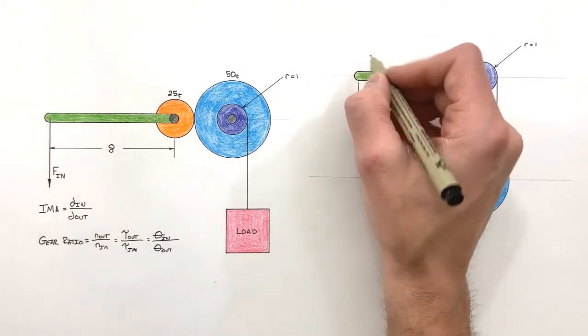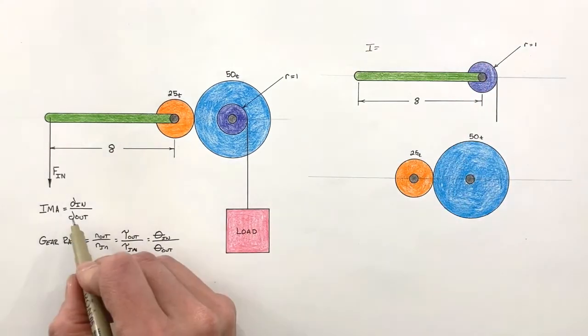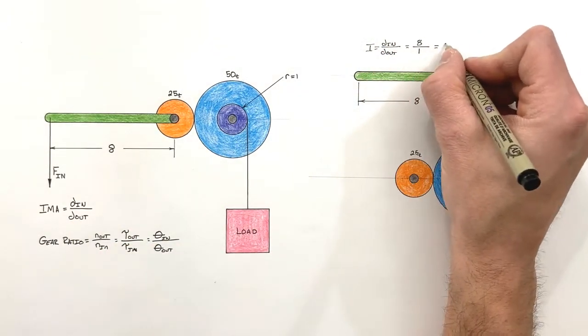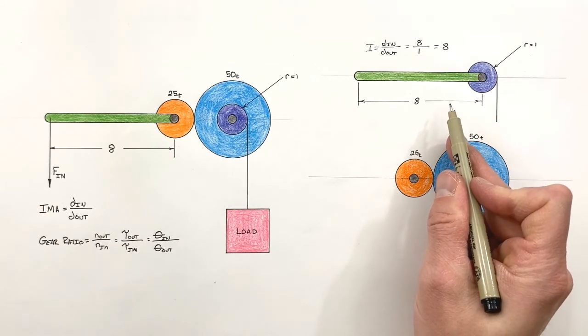Looking at the lever first, we know the IMA of a lever, as we talked about earlier, is d in over d out. And we find the lever has an IMA of eight.